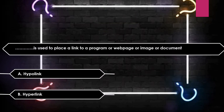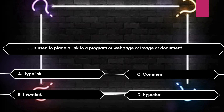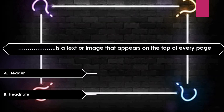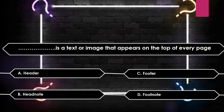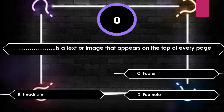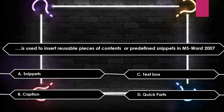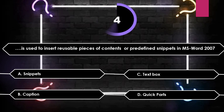What is used to place a link to a program, web page, image, or document? Options: Hyperlink, Comment, Hyperion. The answer is Hyperlink. A text or image that appears on the top of every page — options: Header, Headnote, Footnote. The answer is Header. What is used to insert reusable pieces of content or predefined snippets in MS Word 2007? The answer is Quick Parts.